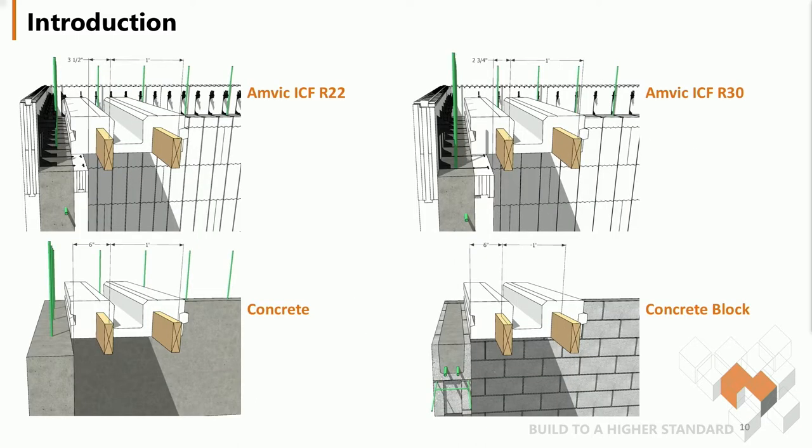In this presentation you will see AMDEC mostly used on AMDEC ICF wall forms. The R22 and R30 are both interchangeable. However, there is no reason it cannot be used with traditional poured concrete walls or reinforced CMU walls. The key point is to make sure the correct reinforcement is used.